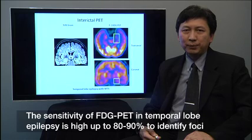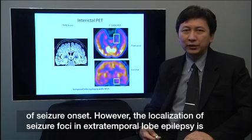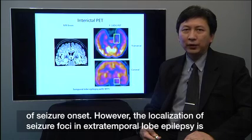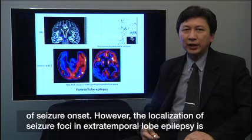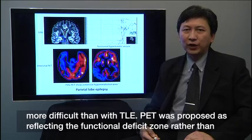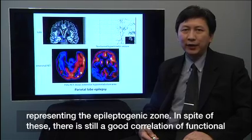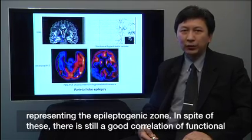The sensitivity of FDG PET in temporal epilepsy is high, up to 80-90%, to identify the focus of seizure onset. However, the localization of seizure foci in extratemporal epilepsy is more difficult than in temporal epilepsy. PET was proposed as reflecting the functional deficit zone rather than representing the epileptogenic zone.